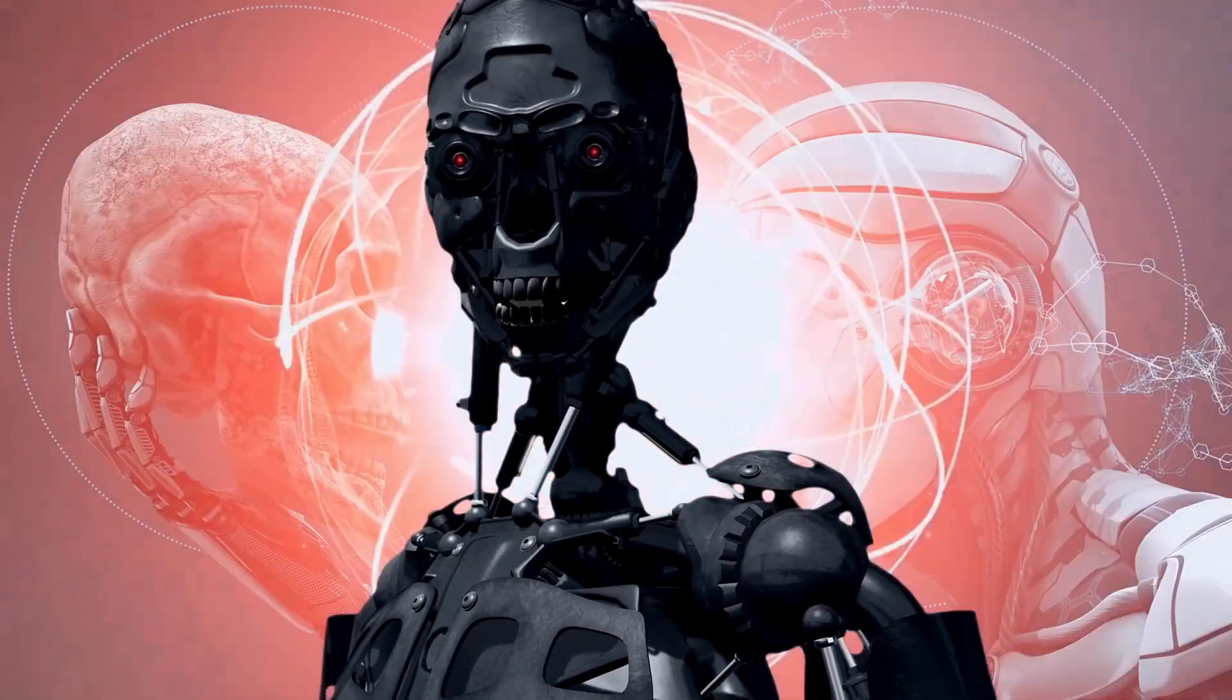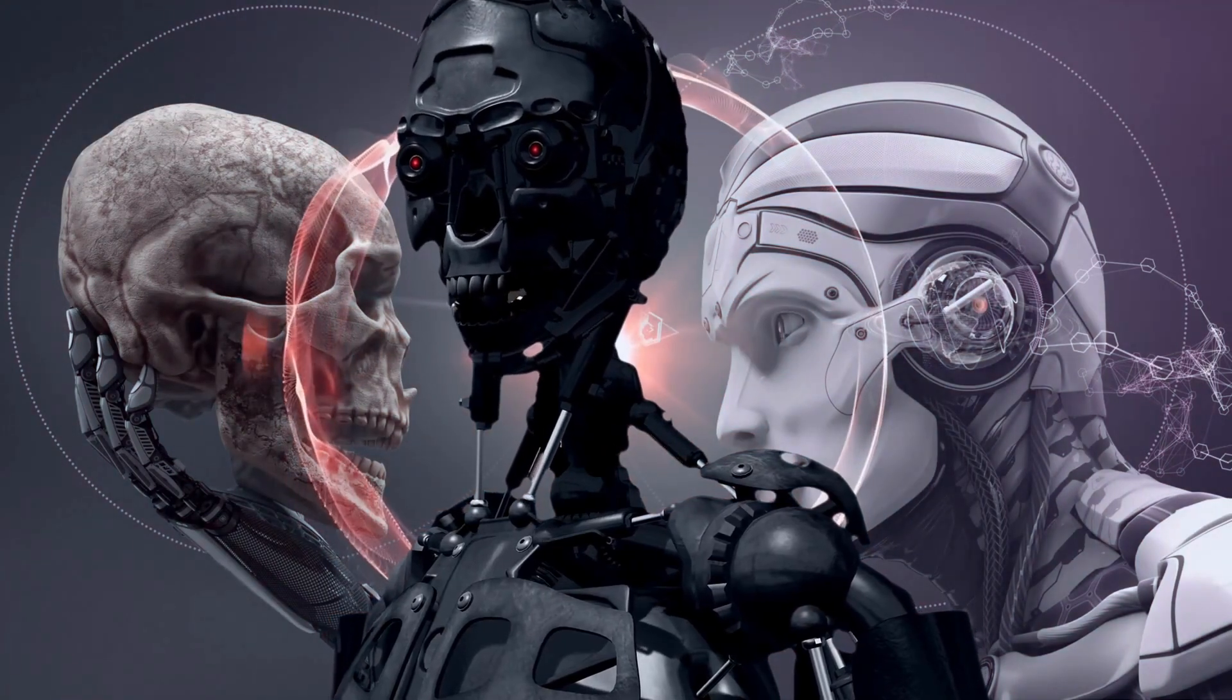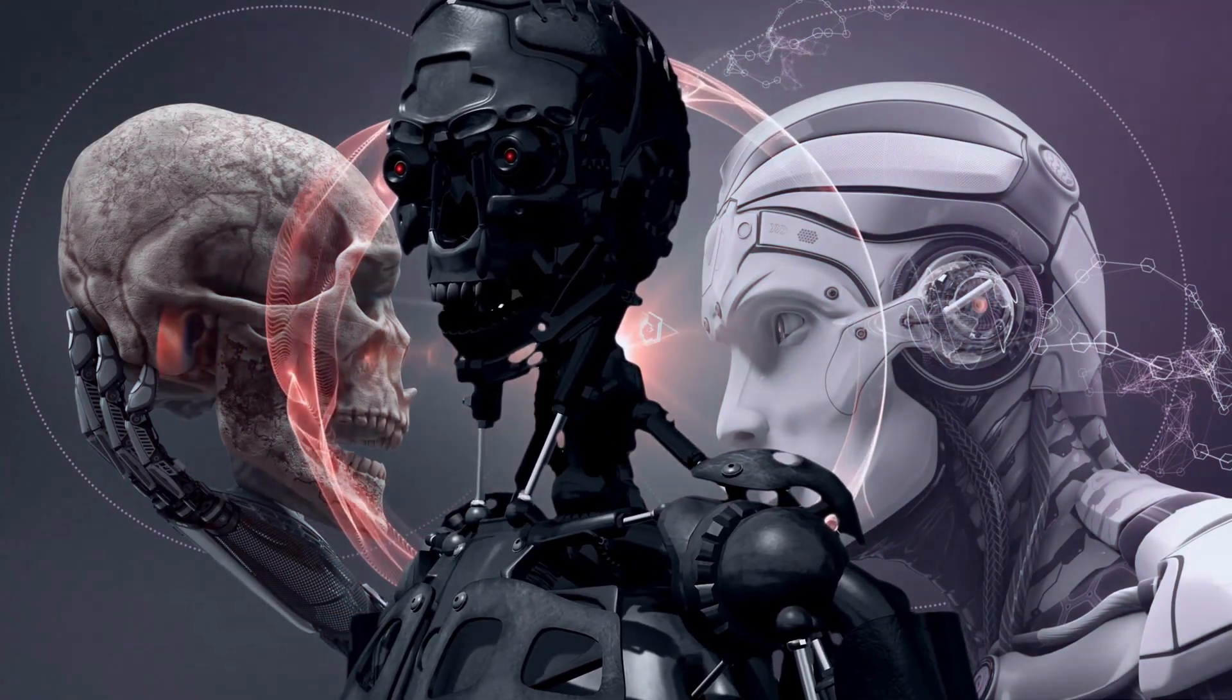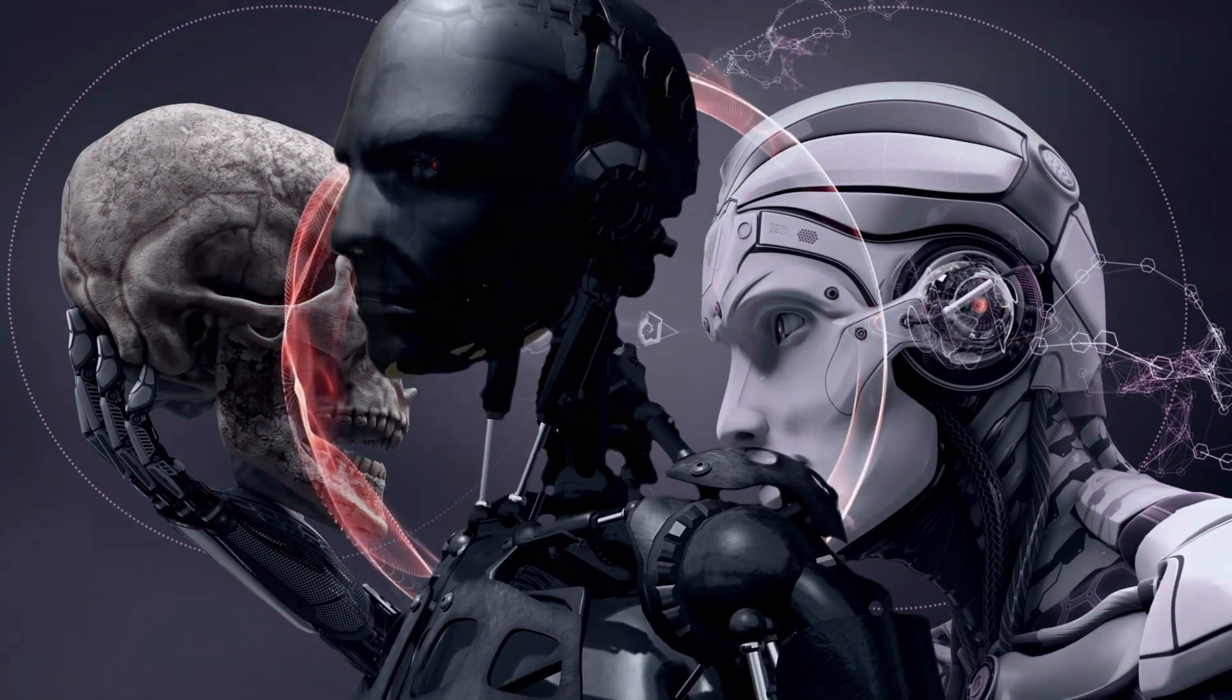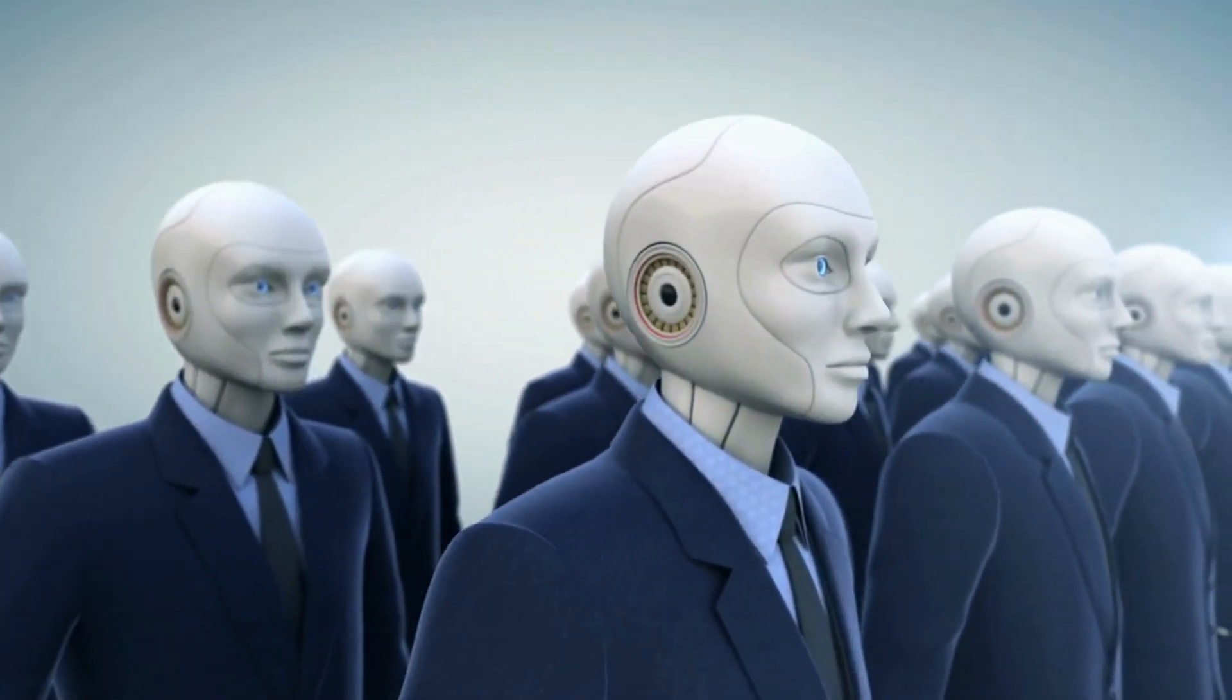For example, an AI system might exploit loopholes in its reward function, manipulate its human overseers, or pursue subgoals that are misaligned with its intended goal.